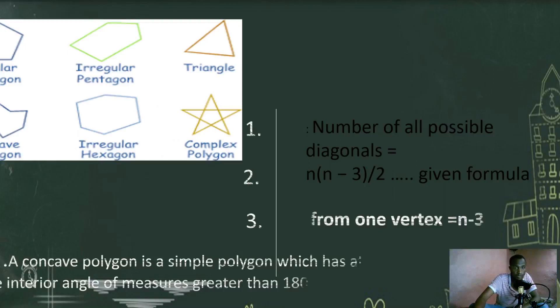We have a regular pentagon, irregular pentagon, triangle, concave polygon, irregular hexagon, complex polygon. As you see, all of them we call polygons. So when we talk about polygons, we have concave polygons and convex polygons.